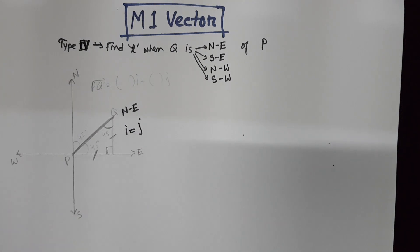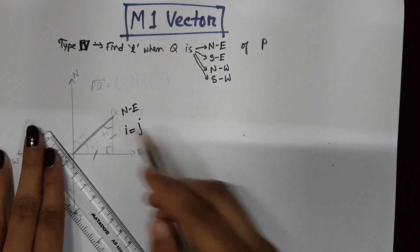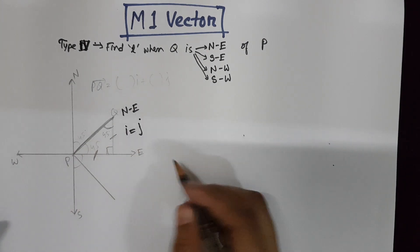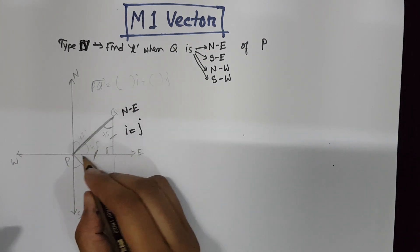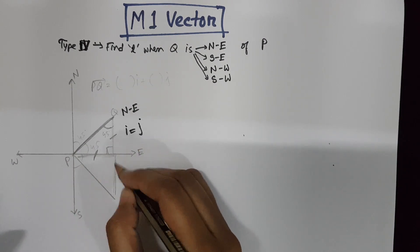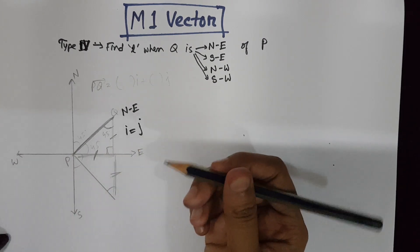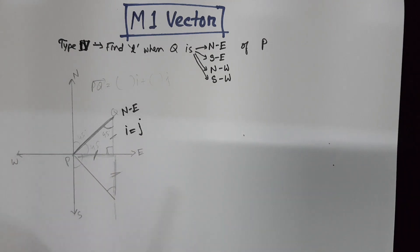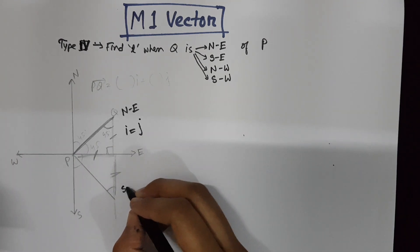Similarly, if the particle was due south-east, in that case, the angle will be 45-45. Similarly, this I coordinate and J coordinate will be the same. But in this case, the Y coordinate is in a negative direction. So if it's south-east, then I coordinate will be negative J.